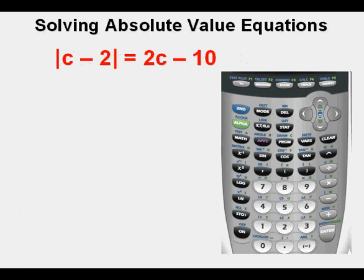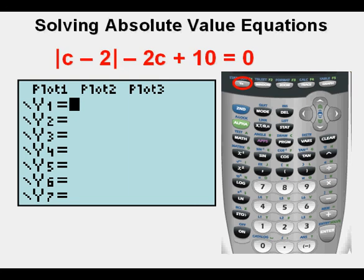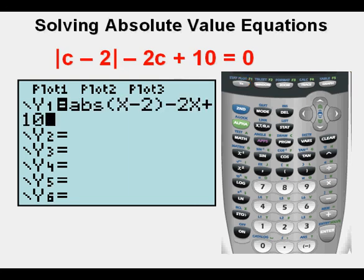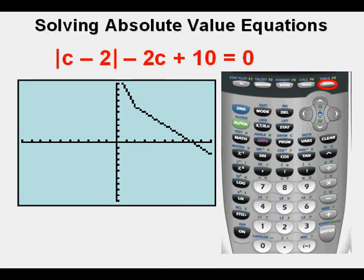Let's try another one. For this one, we're going to bring the terms on the right side over to the left. And so we had 2c on the right side became minus 2c on the left. And the minus 10 on the right becomes plus 10 on the left. We go to y equals again. We enter the left side in y1. Again, we can't use anything but x for variables here. Now graph it by pressing graph or zoom 6.